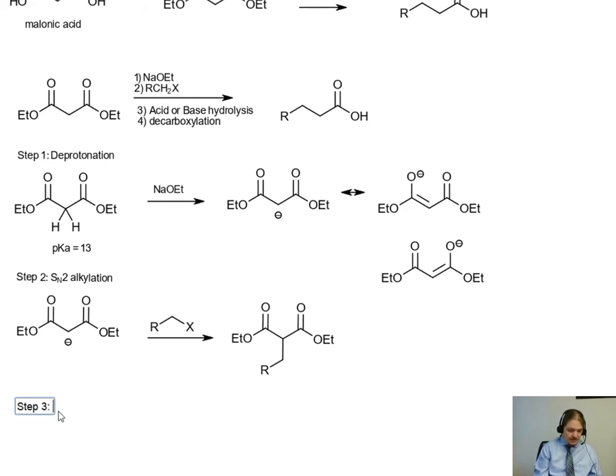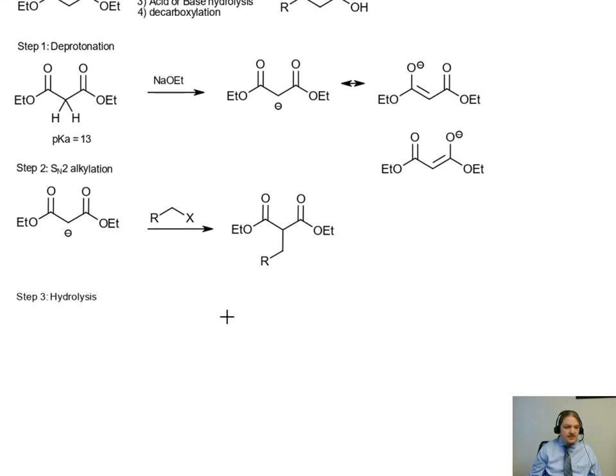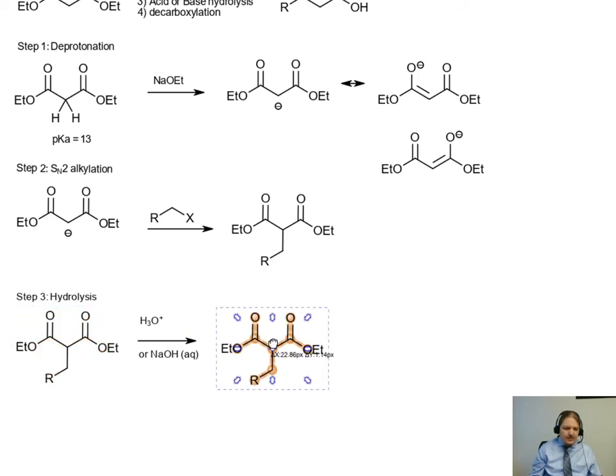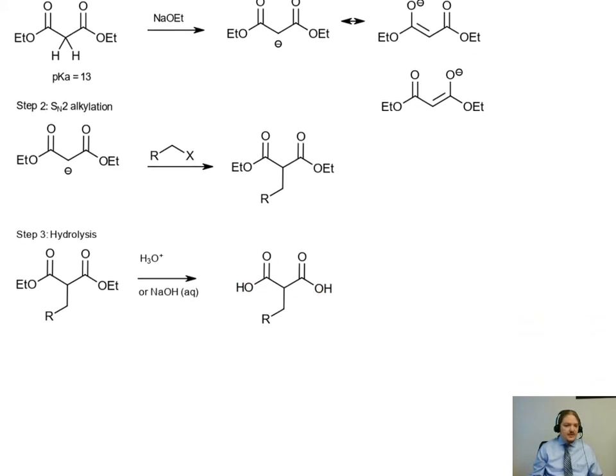And then we end up with a substituted diethylmalonate. The third step is hydrolysis of the two esters. And again, I'm not going to draw the mechanism of this step either. This is a reaction that I've covered fairly extensively in other places. But just remember that you can hydrolyze this ester in either aqueous acid, so H3O plus, or aqueous base, like sodium hydroxide in aqueous solution. And if you choose the base, then you're going to need to neutralize the reaction to get the neutral acid out.